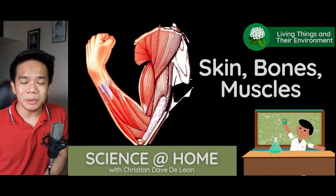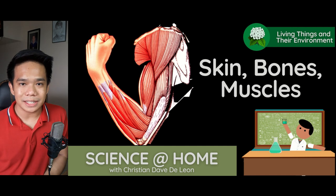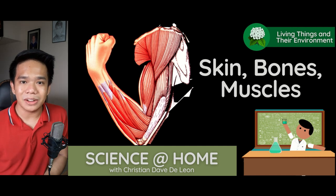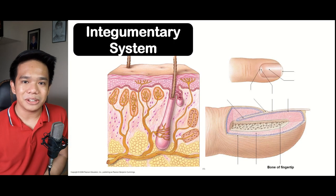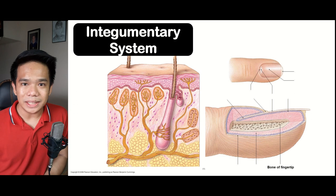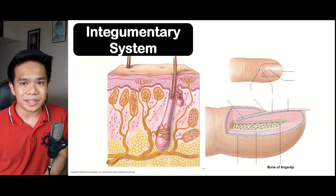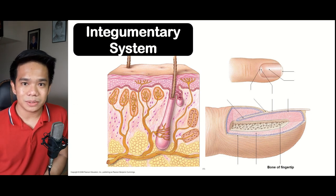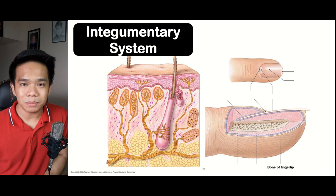We will start first with the skin. The skin belongs to our integumentary system. By the way, the skin is considered as the largest organ in the body in terms of its size, simply because the skin covers almost all of the parts of the body.